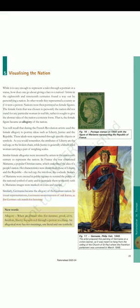Similarly, Germania became the allegory of the German nation. In visual representations, Germania wears a crown of oak leaves, as the German oak stands for heroism. New words — Allegory: when an abstract idea, for instance greed, envy, freedom, liberty, is expressed through a person or a thing. An allegorical story has two meanings, one literal and one symbolic. Fig. 16: Postage stamps of 1850 with the figure of Marianne representing the Republic of France. Fig. 17: Germania by Philip Veit, 1848. The artist prepared this painting of Germania on a cotton banner, as it was meant to hang from the ceiling of the Church of Saint Paul where the Frankfurt Parliament was convened in March 1848.